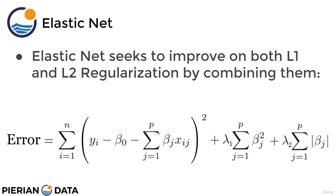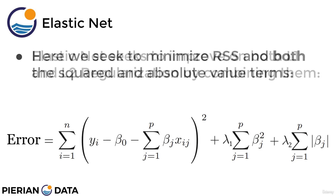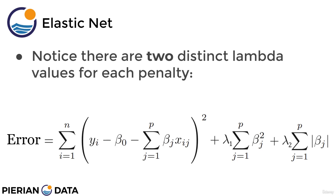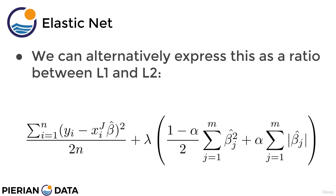So what elastic net seeks to do is to improve on both L1 and L2 regularization by combining them. The full error term we're trying to minimize for elastic net has the residual sum of squares plus the squared penalty and the absolute value penalty — so we're minimizing both the squared and absolute value terms along with RSS. It's important to note that there are actually two distinct lambda values: lambda 1 for the ridge penalty and lambda 2 for the lasso penalty.